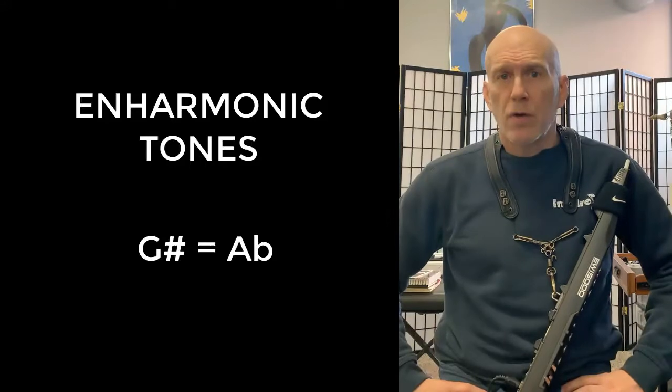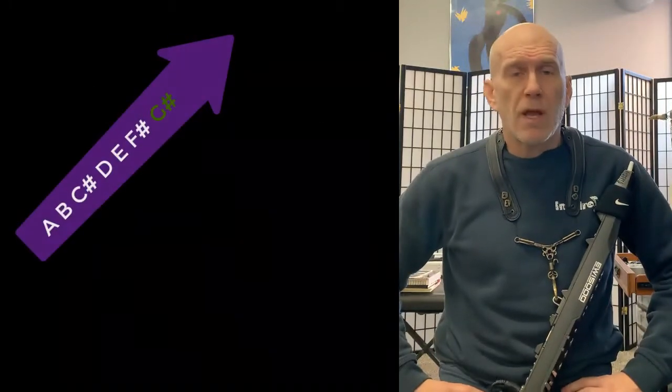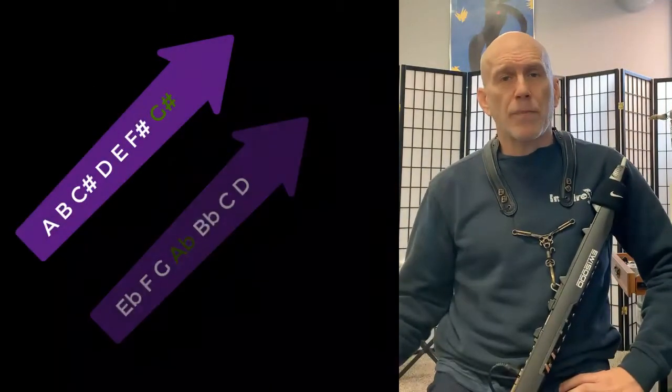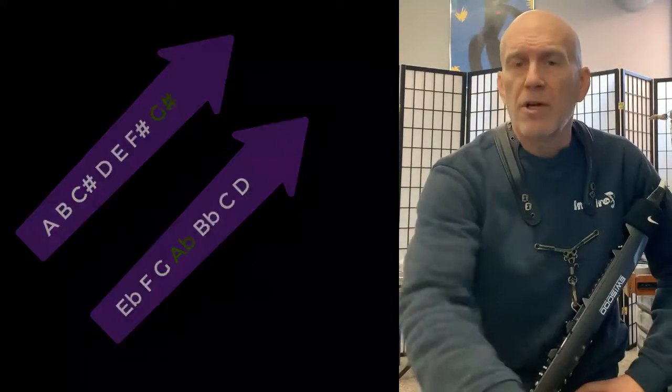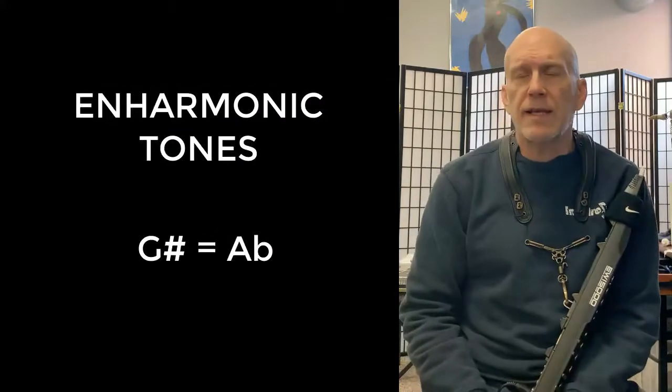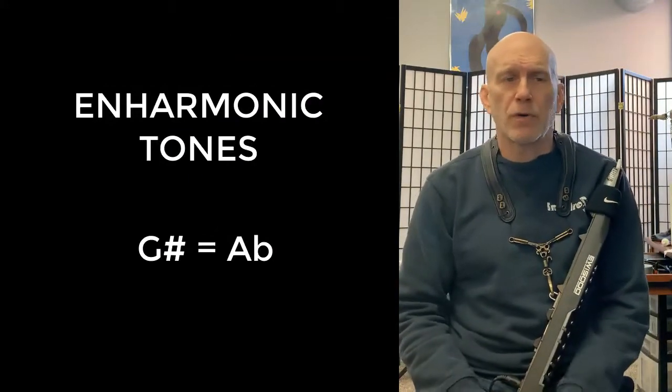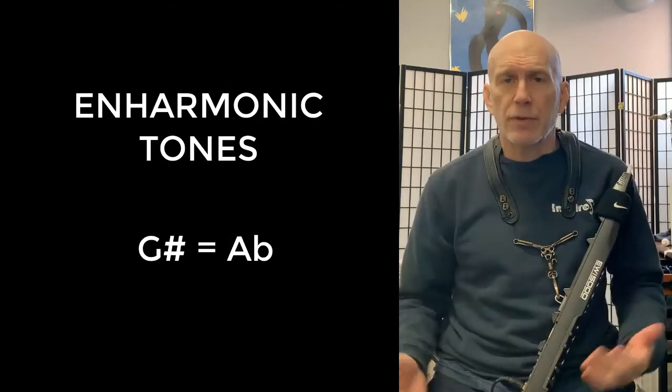So in the A scale, we'll have a G sharp, and then in the E flat scale, we will have an A flat. They're the same sound, but they're called two different things. And the easiest explanation for this, for one sound having two names,